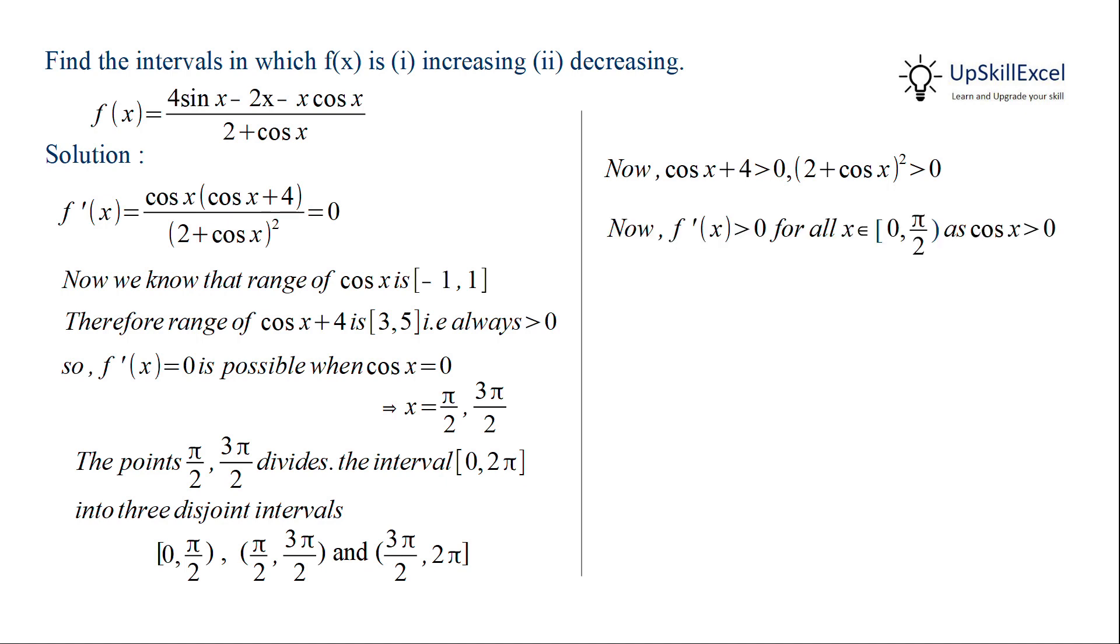Now in the domain 0 to π by 2, cos x is always positive, so f prime x is also positive. In the interval π by 2 to 3π by 2, cos x is less than 0, so f prime x is also less than 0. And in the interval 3π by 2 to 2π, cos x is greater than 0, so f prime x is also greater than 0.